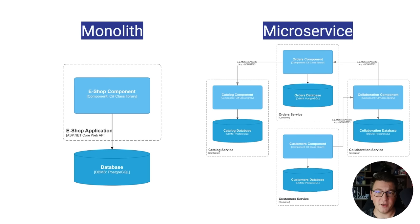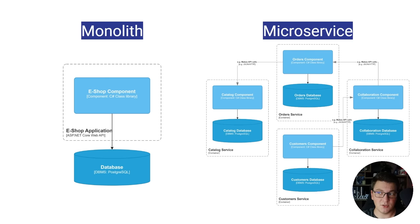Definitions are useful but let's look at an example. On one side we have a diagram of a monolith system for an eshop application implemented using ASP.NET Core with a single PostgreSQL database, representing the module as a single deployment unit. On the other side, a microservices system implements the same functionality with physically separated components: the catalog service, order service, customer service, and collaboration service — all essentially modules or bounded contexts.